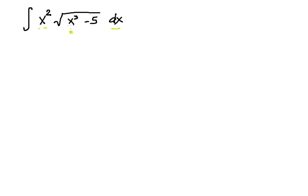So basically, the technique here — if you see something like based on their power, for example, this is raised to 3 — we know that when we take the derivative, we subtract 1 from the power. So if this is 3, then the derivative is raised to 2. So we have x squared. If you take the derivative of x cubed, our answer might be in the form of x squared.